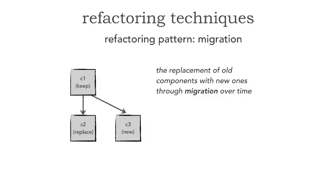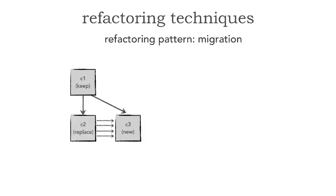At that point, C1 is completely pointing over to C3 with its new functionality, and we can remove the old component. If we analyze this refactoring pattern, it's really easy to roll back changes because we have the old functionality still existing in component 2. So if we do have an error, we can simply switch C1 back over. Because of that, there's a lot less risk with this migration pattern.